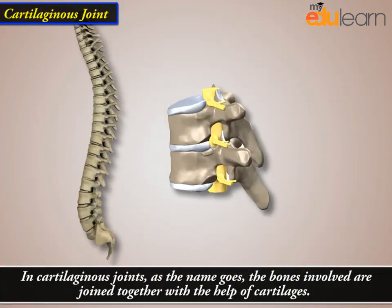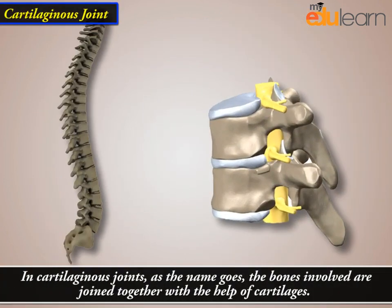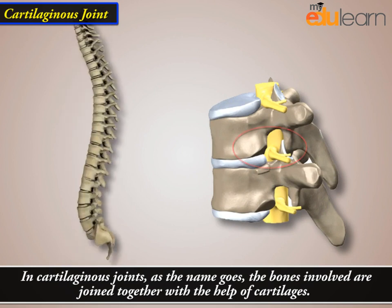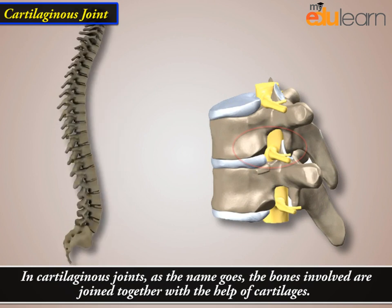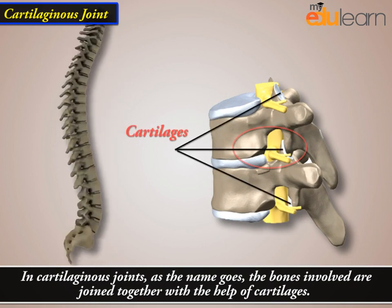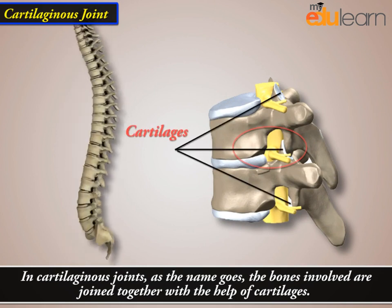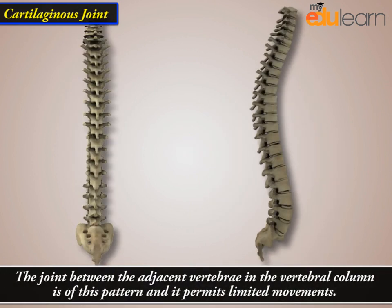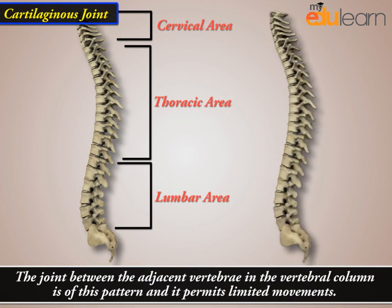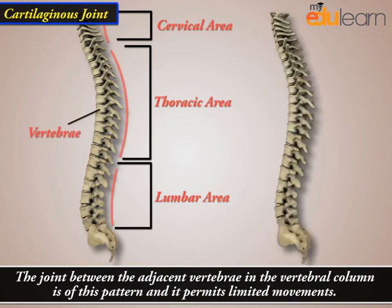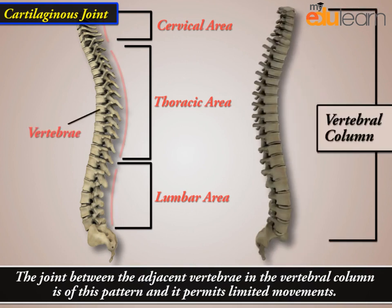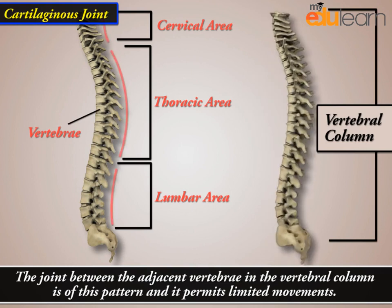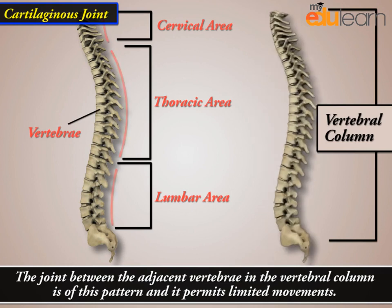The cartilaginous joints — as the name goes, the bones involved are joined together with the help of cartilages. The joint between the adjacent vertebrae in the vertebral column is of this pattern and permits limited movements.